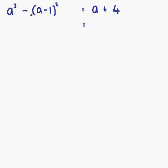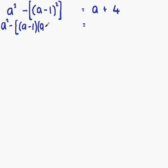Before we multiply through by minus 1, we are going to work out our a minus 1 all squared. To keep things simple and clear, we introduce some squared brackets to work out this part first. So writing down what we have: a squared, then our minus sign, and inside the squared brackets we have a minus 1 all squared, which means a minus 1 times a minus 1. That equals a plus 4.